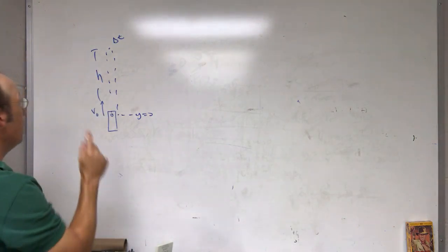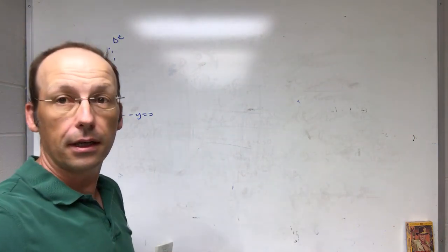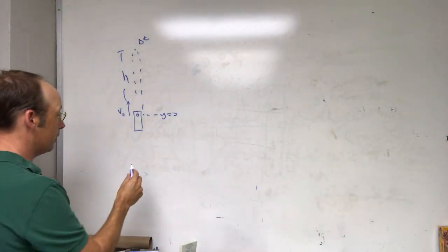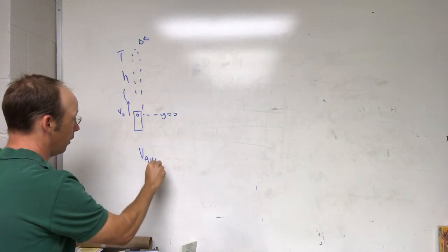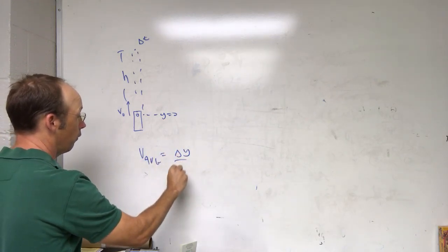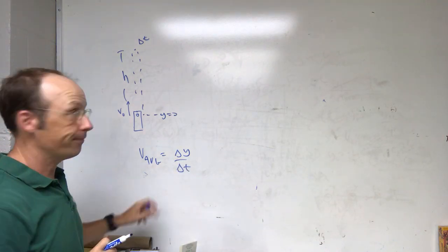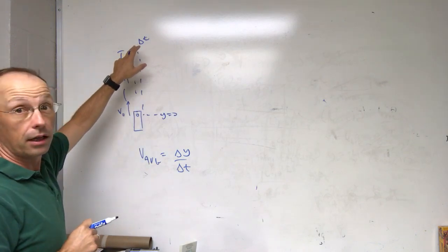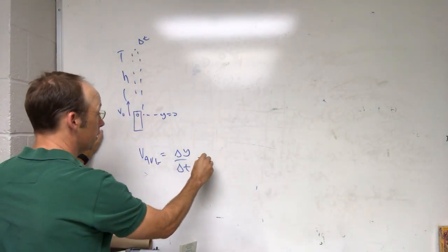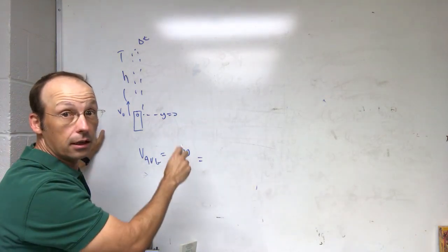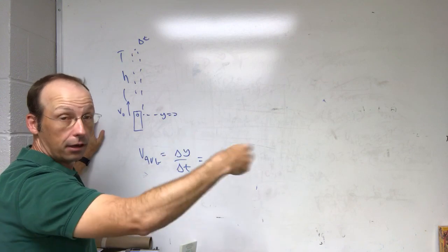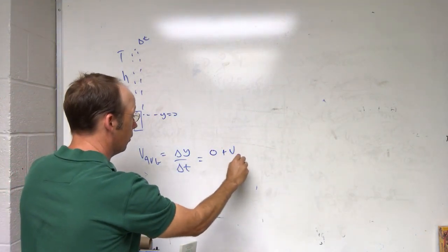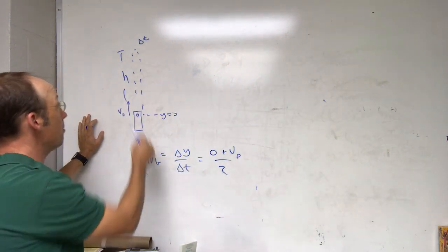You might say use height and time to find velocity directly, but that doesn't work because this is not a constant velocity problem — it has constant acceleration due to gravity. However, you can use average velocity as change in y over change in time, because at the highest point the velocity is zero. So average velocity equals initial velocity plus final velocity divided by 2.